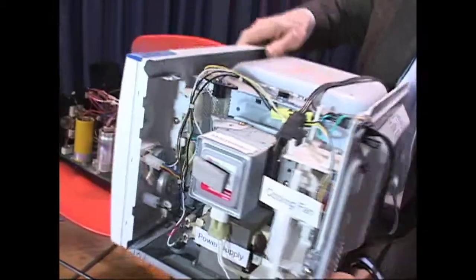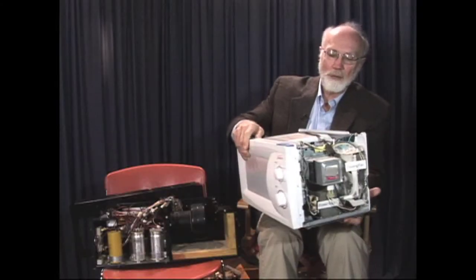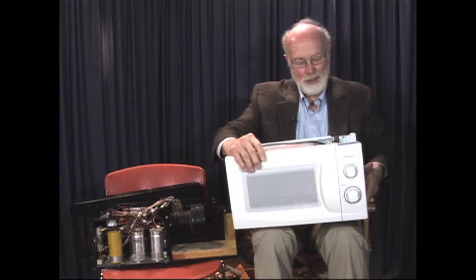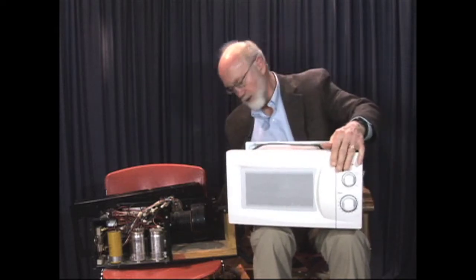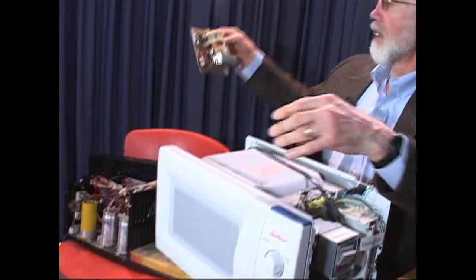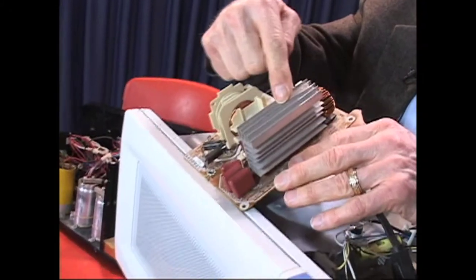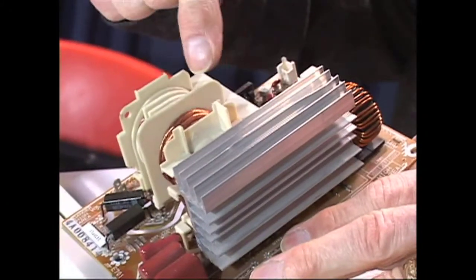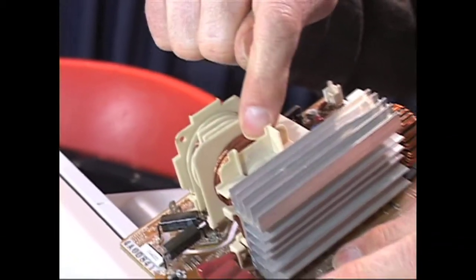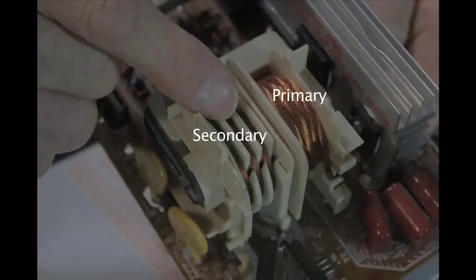Now even this makes for a relatively heavy appliance, and the more modern microwave ovens now use a very lightweight high frequency power supply. This uses transistors over here to make, and this is a primary of a transformer and this is a secondary.